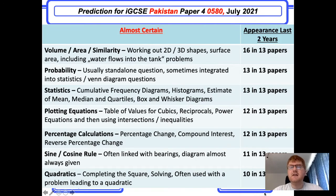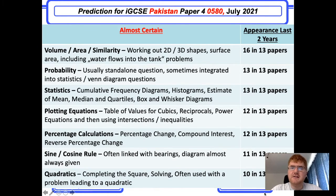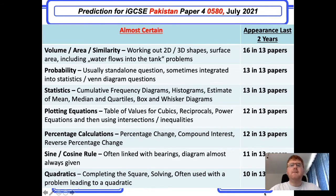Hello and welcome to another Ginger Mathematician video where I'm going to go through my predictions for the IGCSE Paper 4 completed in Pakistan in July and August 2021. This is a strange situation due to COVID where Cambridge IGCSE have decided to have just one paper, and the entire grade will come from this paper. I've started with my predictions by taking the almost certain categories from the IGCSE predictions I did for 0580 earlier around April/May time.